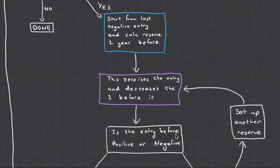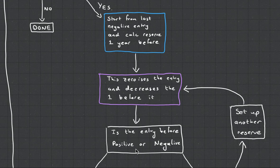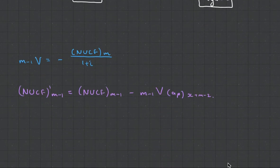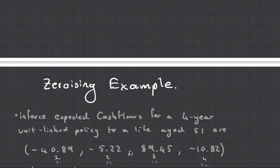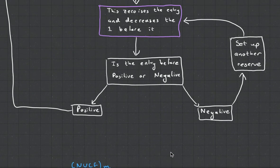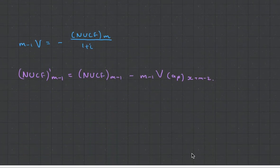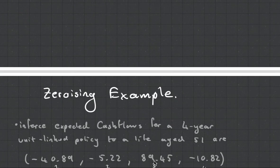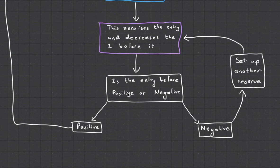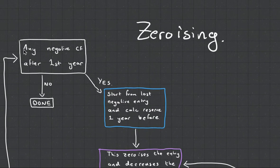Is the entry before positive or negative? So is the entry before it positive or negative? And in our case, it is negative. So what we need to do is, oh no, sorry, this entry is positive. It's positive because 89 becomes 79. So we say positive and we come back here.